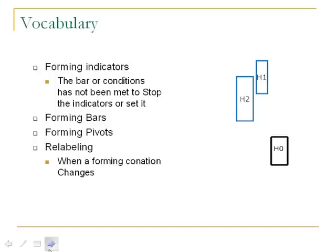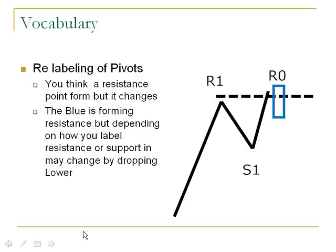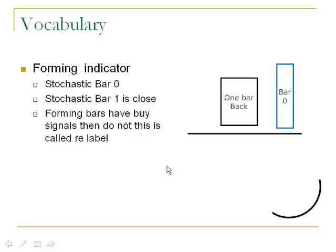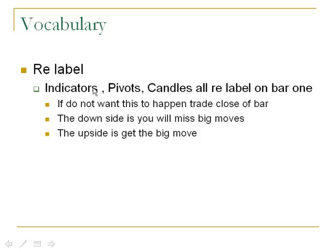Forming bars deal with a problem called relabeling. Relabeling means, for example, you go above resistance — r1 would be resistance — and then it pops right back down, potentially changing the way your indicator looked or your support and resistance. A doji that travels down and then runs up might look like an engulfing bull candle. Candles change all the time in real time, and the same happens with indicators — they move up and down based on one bar. If you go one bar back, they stabilize. If you don't want relabeling, trade on bar close, though the downside is you may miss big moves.